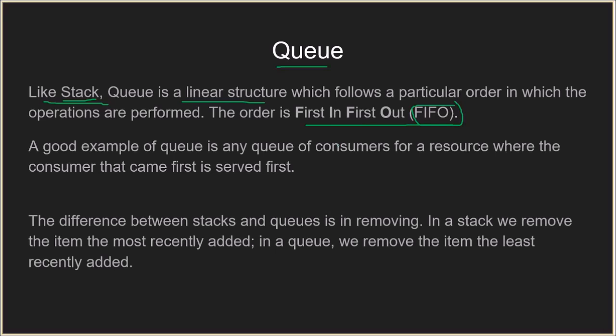A good example to understand the concept behind queue can be any queue of customers for a resource, where the customer that came first is served first. So when you go to McDonald's and you need to have a burger, whoever came first is served first. You keep maintaining a queue, and if you have five people who came before you, then after those five people are served, only then you are served. This is actually how a queue works — it is very close to a real-life queue.